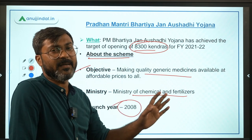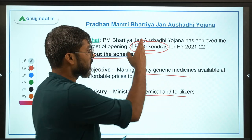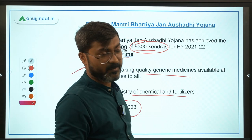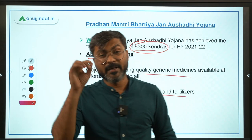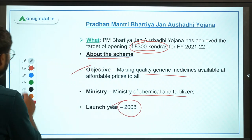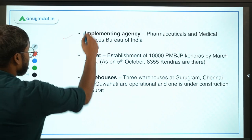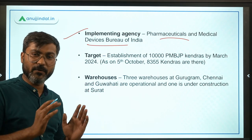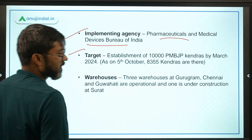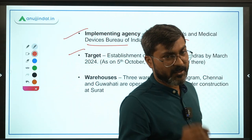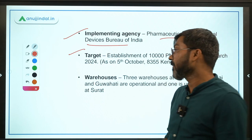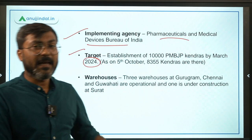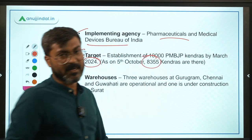The implementing agency is the Pharmaceuticals and Medical Devices Bureau of India. The target is to establish 10,000 Pradhan Mantri Bharatiya Janaushadhi Kendras by March 2024. As on 5th October 2021, there are already 8,350 Kendras. There are three operational warehouses at Gurugram, Chennai, and Guwahati, and one under construction at Surat.